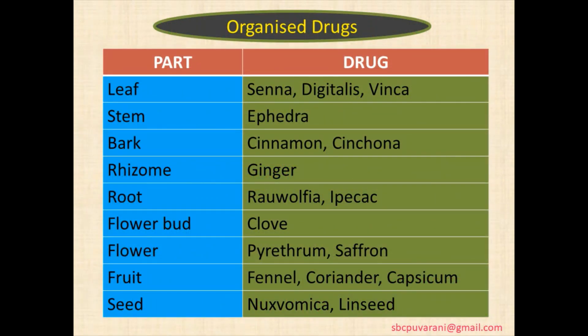Examples of organized drugs are obtained from different parts of the plant. Leaves: senna, digitalis, vinca. Stem: ephedra. Bark: cinnamon, cinchona.